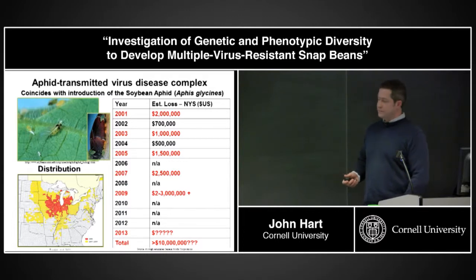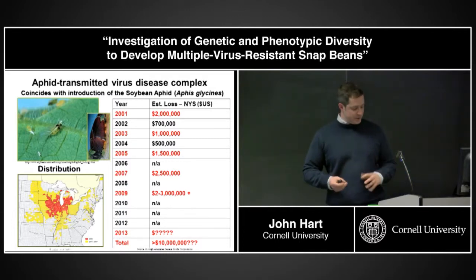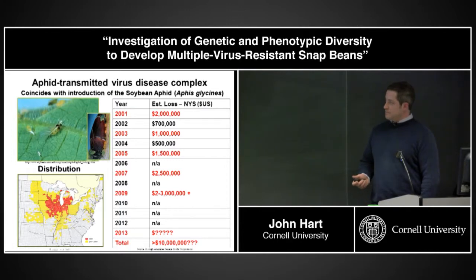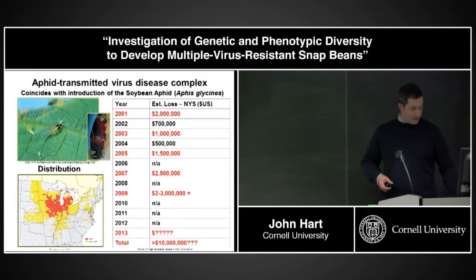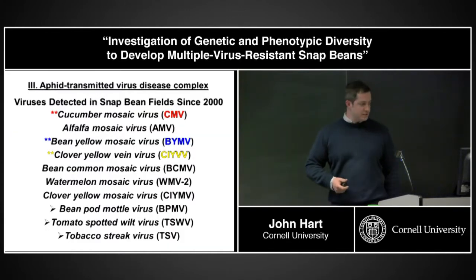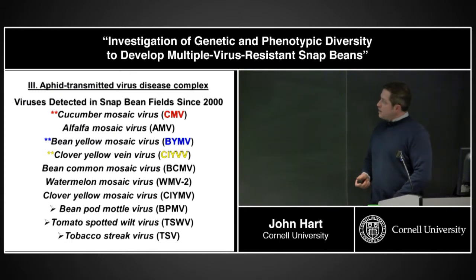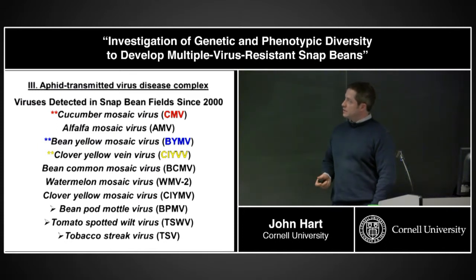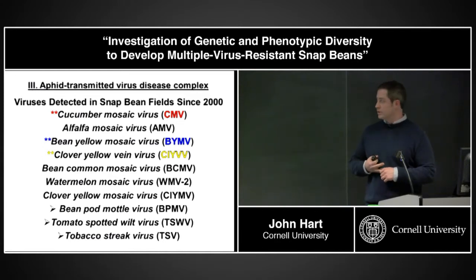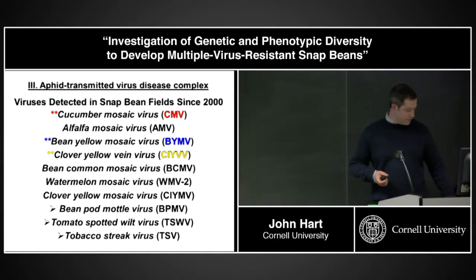The problem seemed to not appear very often from 2010 onward, possibly due to natural enemies controlling populations. But then in 2013, particularly in Wisconsin, aphid-transmitted viruses were back and very damaging. There is really a complex of viruses that you could find since 2000 in a snap bean field. The most prevalent and damaging ones — highlighted in the presentation — are the ones that both Griff's program and my research focused on.